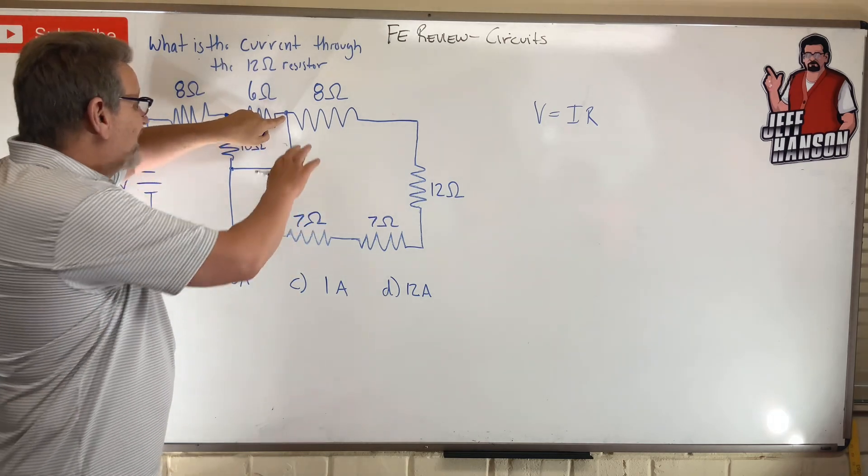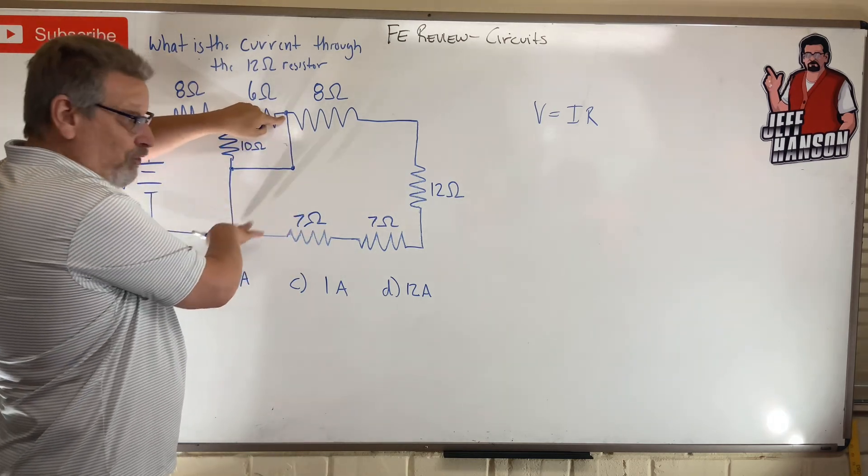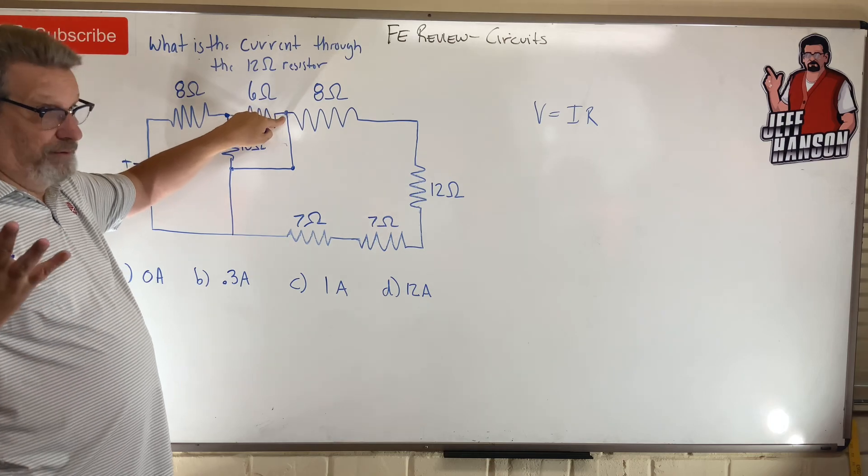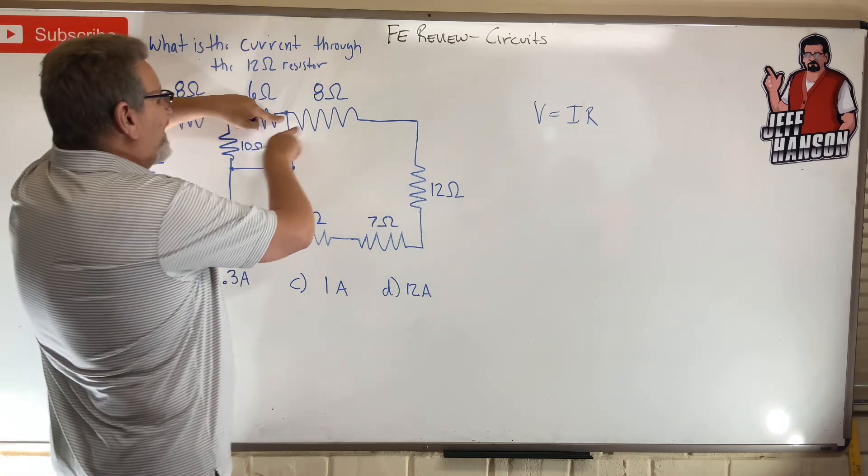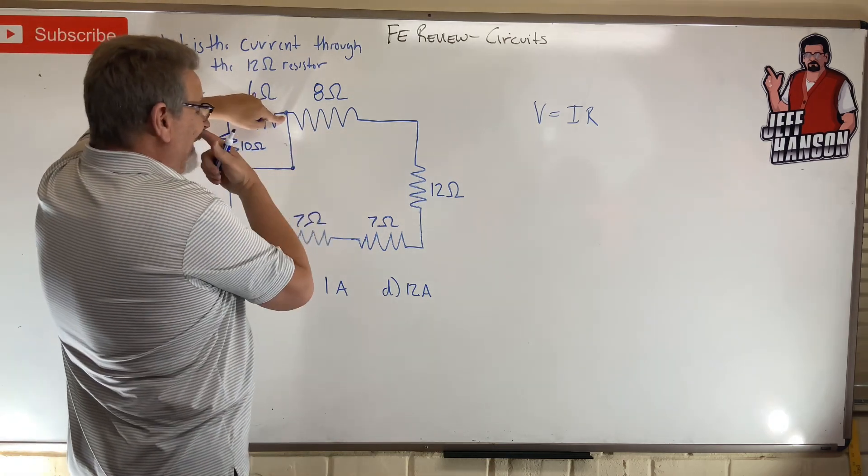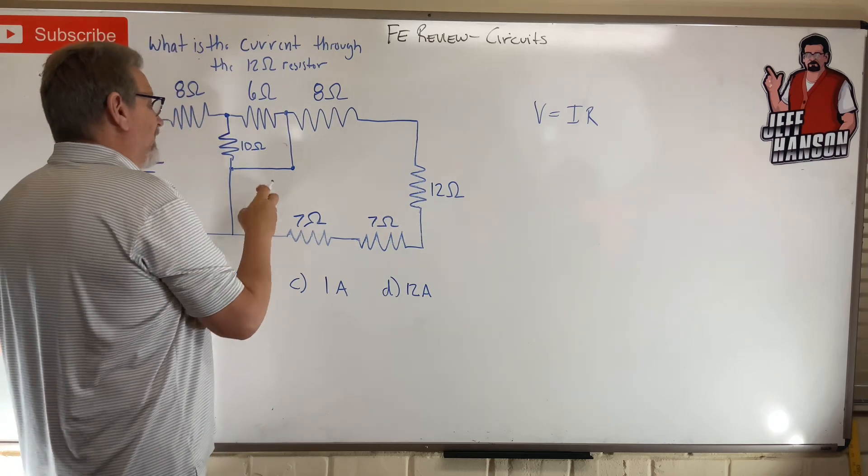It can say, oh, I can either have no resistance, the rest of the thing, oh I like that, or I can go this way and I can hit resistance. So this is called a short circuit right here, okay?